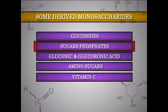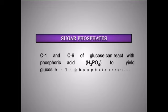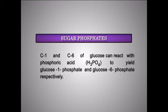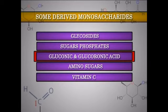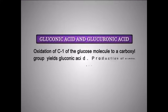Sugar phosphates. Carbon-1 and carbon-6 of glucose can react with phosphoric acid (H3PO4) to yield glucose-1-phosphate and glucose-6-phosphate respectively. These compounds play an important part in carbohydrate metabolism. Gluconic acid and glucuronic acid: oxidation of carbon-1 of the glucose molecule to a carboxyl group yields gluconic acid; oxidation at carbon-6 yields glucuronic acid.